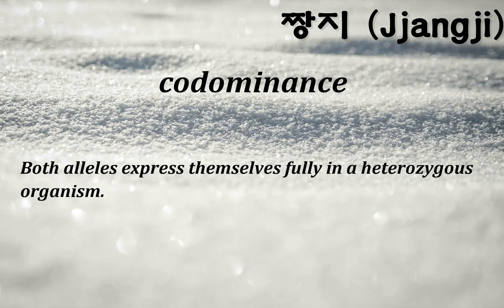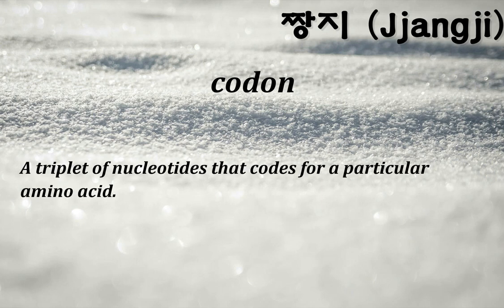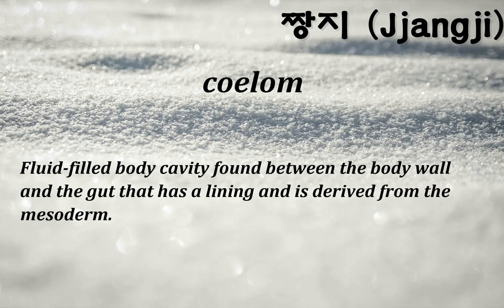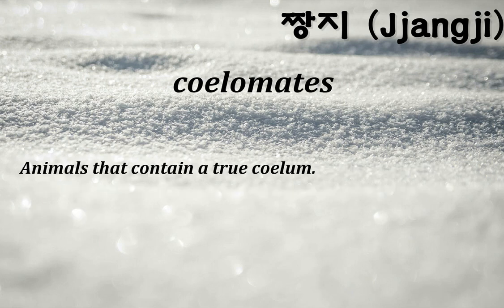Codominance: both alleles express themselves fully in a heterozygous organism. Codon: a triplet of nucleotides that codes for a particular amino acid. Coefficient of relatedness: a statistic representing the average proportion of genes two individuals have in common. Coelom: a fluid-filled body cavity found between the body wall and the gut, having a lining derived from the mesoderm.